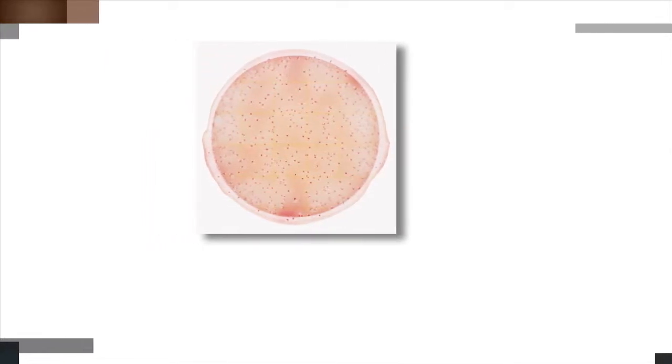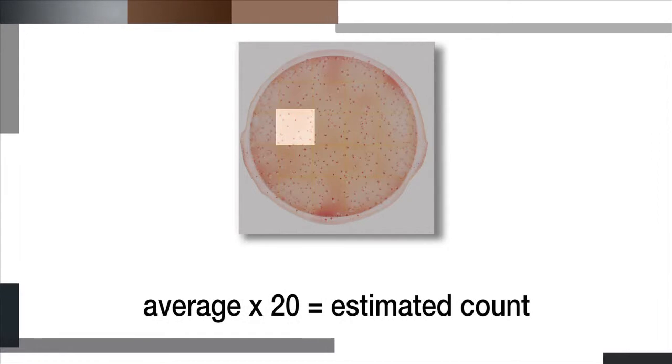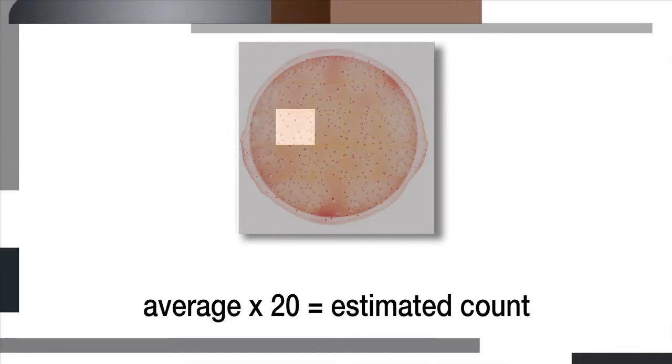For counts over 100 colonies, you can estimate the count. To do this, first count the total colonies in one or more representative squares and determine the average number per square. Multiply that number by 20 square centimeters, which is the inoculated area of the plate. The result is your estimated count.